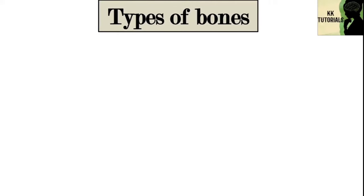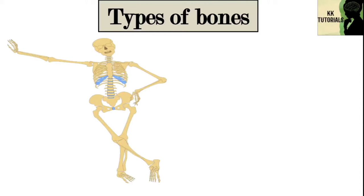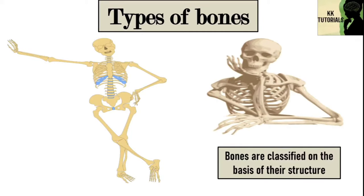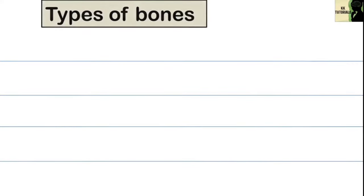We all know that in addition to giving support, the skeleton also gives proper shape and structure to our body. Have you ever thought how bones actually look like? Bones are classified on the basis of their structure. Our body has five different types of bones.